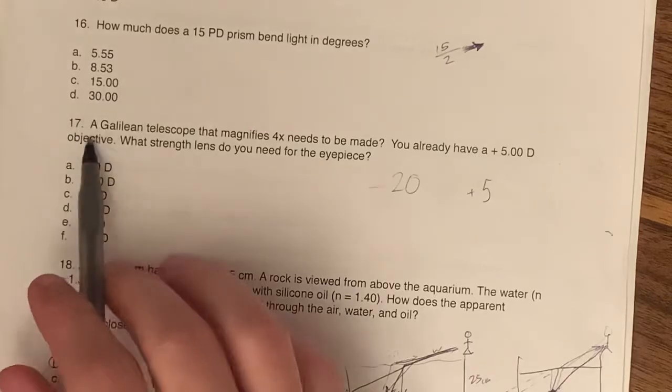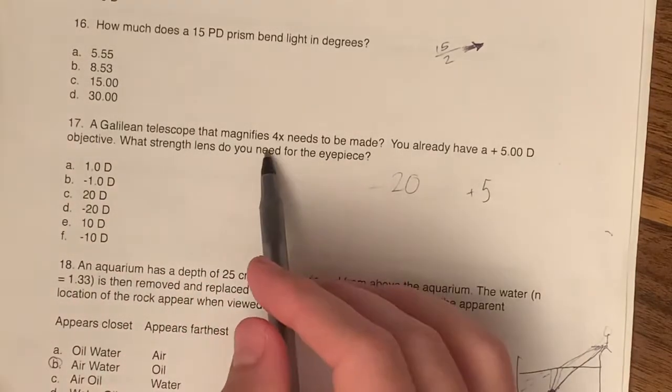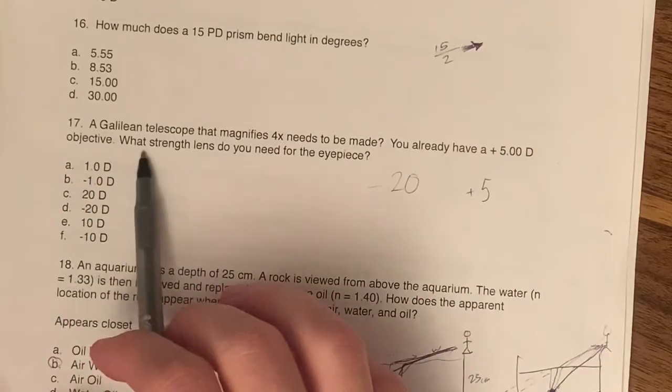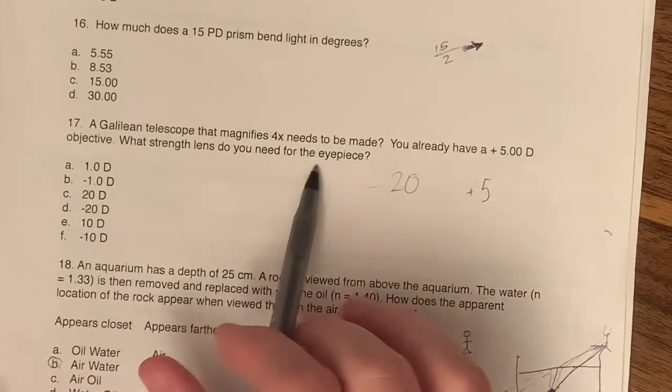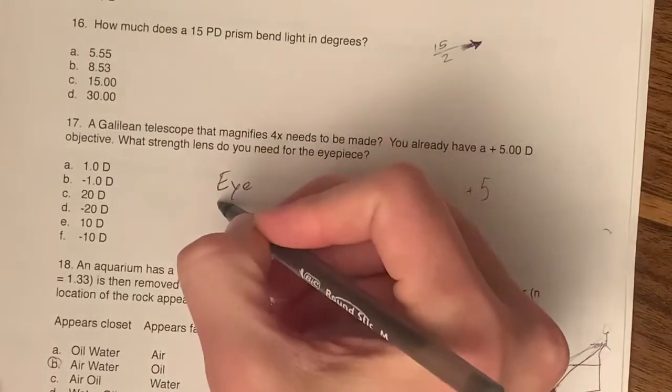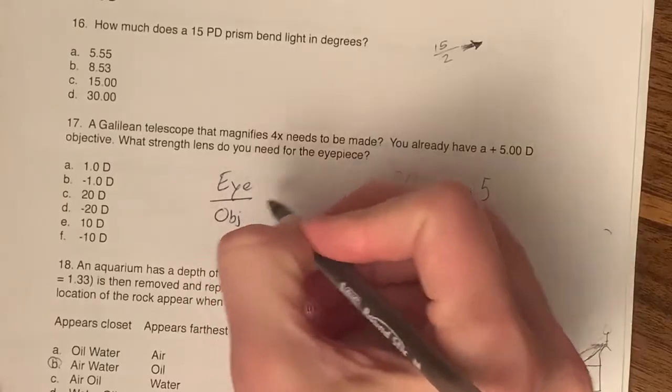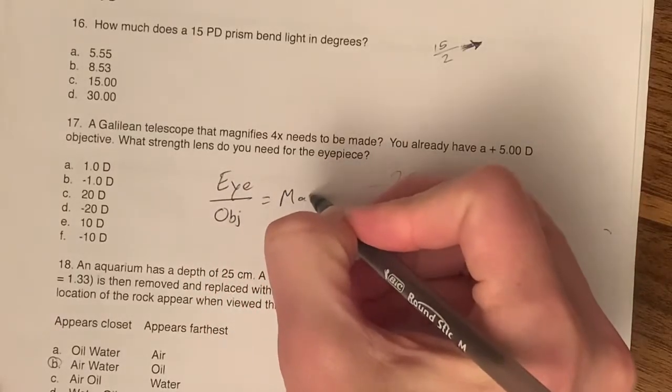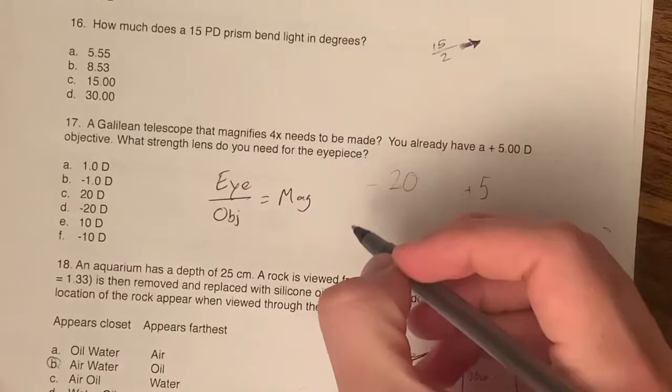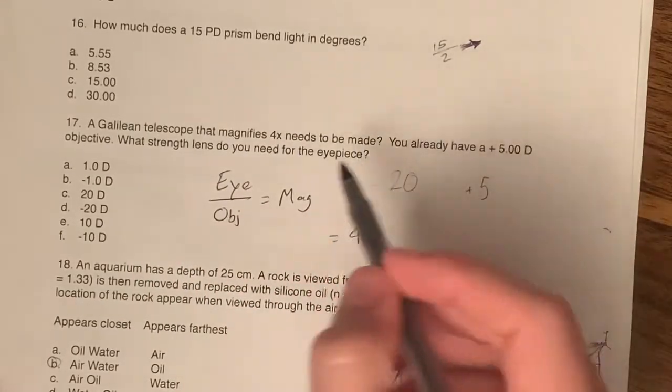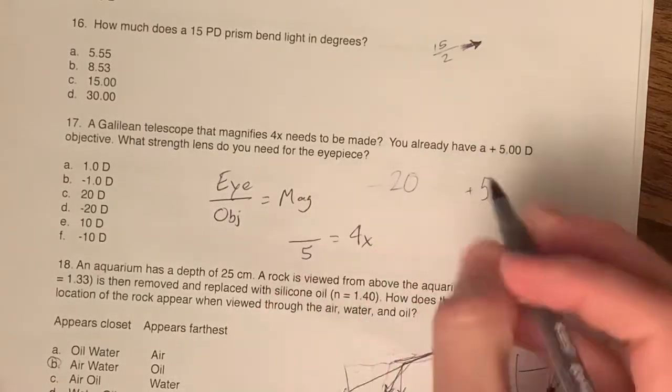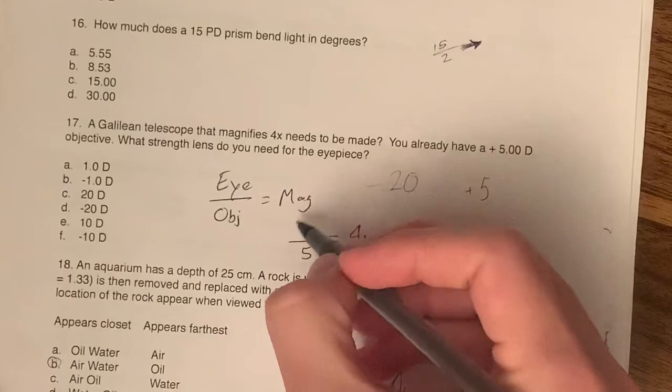Number 17, a Galilean telescope that magnifies 4x needs to be made. You already have a plus five objective. What lens do you need for the eyepiece? So this is a simple formula. The eyepiece over the objective equals the magnification of a telescope.